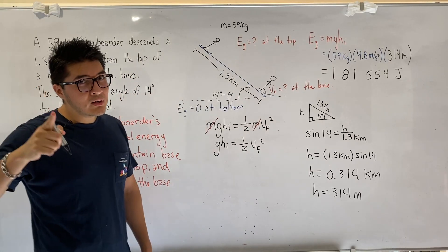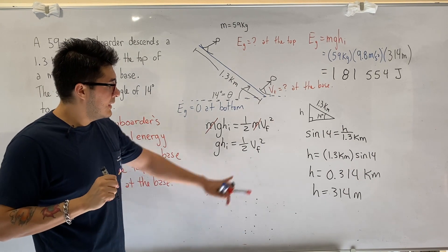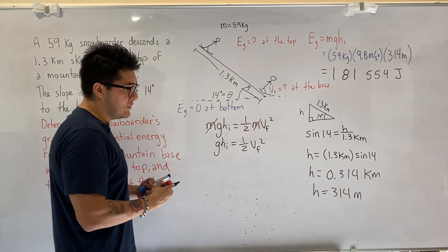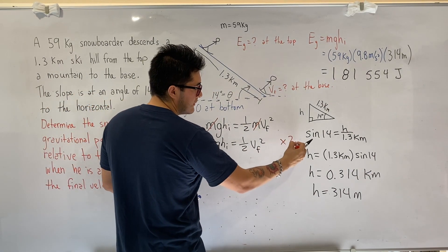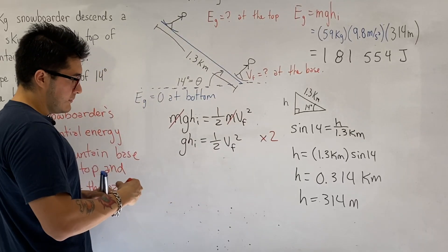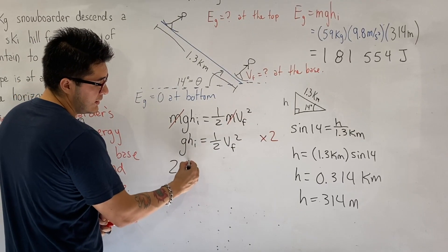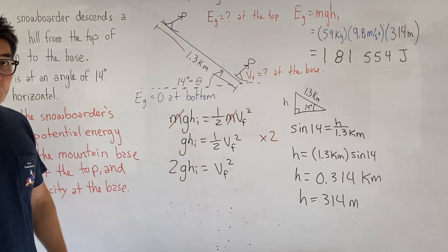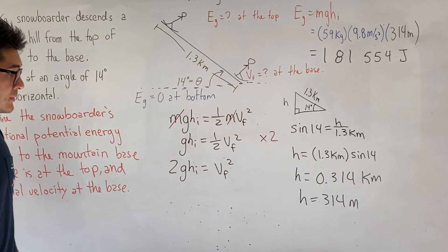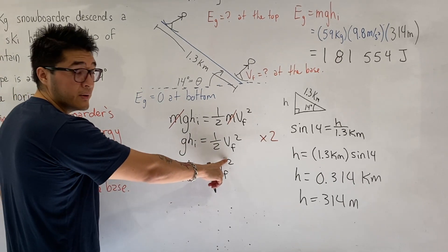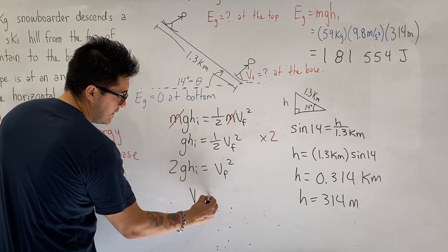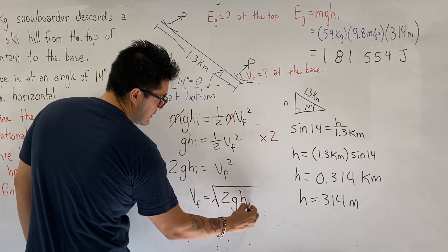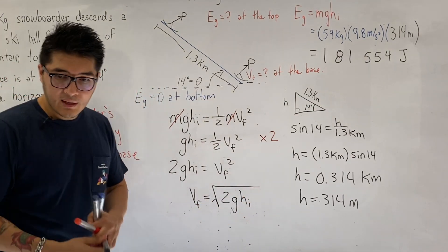Notice that in this equation, we have mass on both sides. So we can divide mass on both sides. Hence, it cancels out. gh initial equals to one-half V final squared. Don't lose sight of your target. We were trying to find the final velocity. In order to do that, we need to get rid of the coefficient of one-half. We're going to multiply both sides by 2. So 2gh initial equals to V final squared. And then to isolate for V final, we're going to take the square root on both sides. V final equals to the square root of 2gh initial.